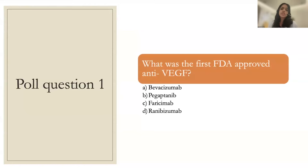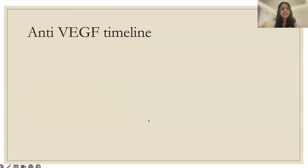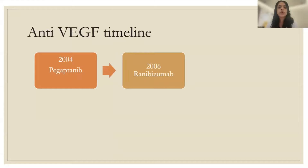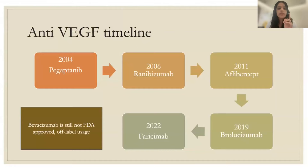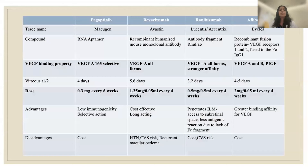Poll question: What was the first FDA-approved anti-VEGF? Most answered bevacizumab, but the first FDA-approved anti-VEGF was pegaptanib in 2004, followed by ranibizumab in 2006, aflibercept in 2011, brolucizumab in 2019, and faricimab in 2022. Bevacizumab is still not FDA approved and remains off-label use, although it is commonly used.